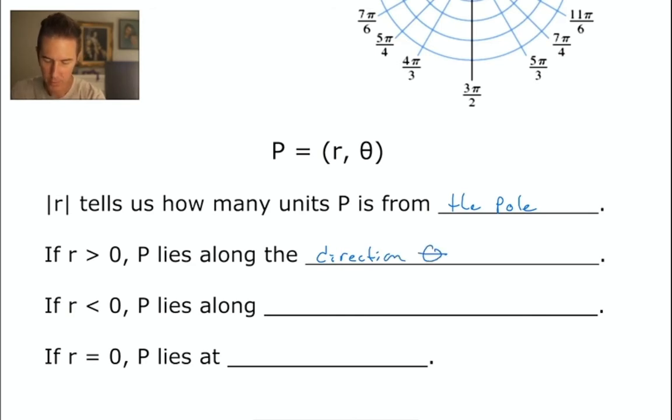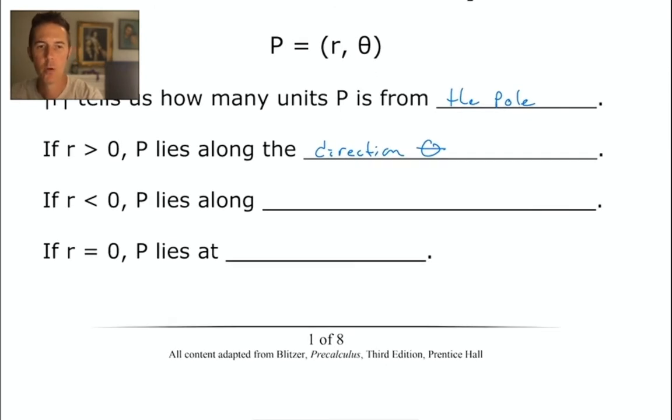If r is less than 0, and we will, for the first time, work with an r value, like a radius, an r value that's less than 0. And what an r value being less than 0 does is instead of us starting at the pole and moving, for example, 3 units in the direction of theta, with a negative r value, we move however many units, 3 units, away from theta.